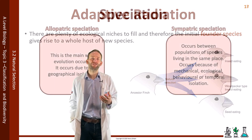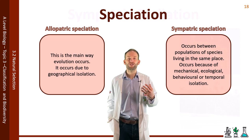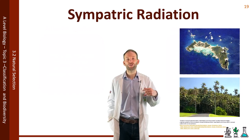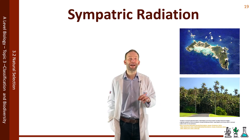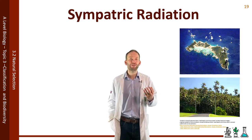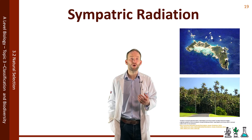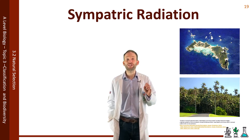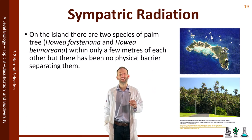Sympatric speciation occurs when organisms still occupy the same habitat, through mechanical, ecological, behavioural, or temporal isolation. An example is Lord Howe Island in the Tasmanian Sea, a tiny volcanic island only 12 kilometres long and one kilometre wide. On the island there are two species of palm tree growing within only a few metres of each other, with no physical barrier at all.